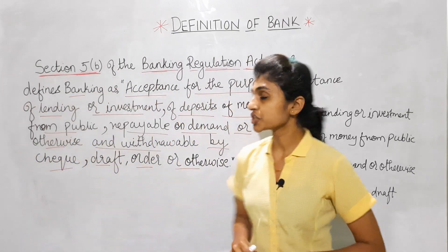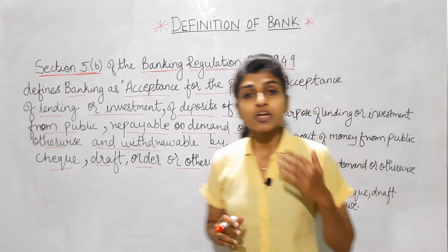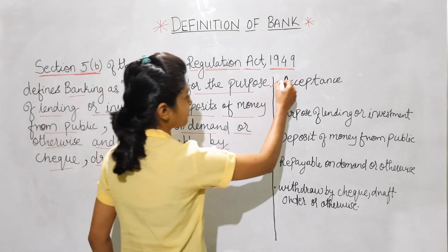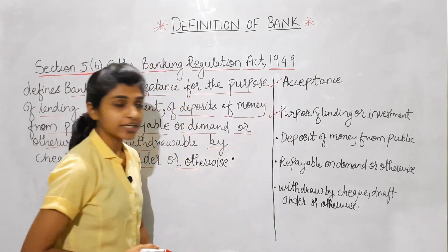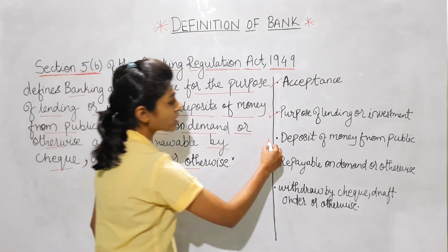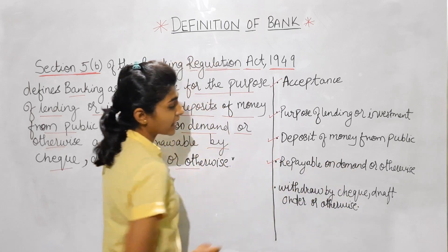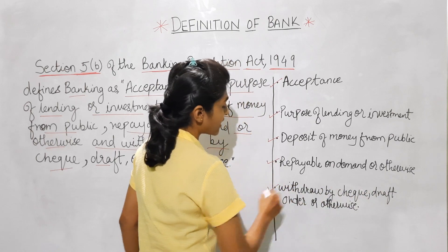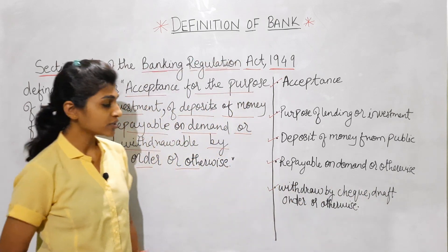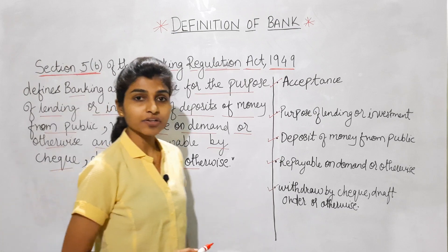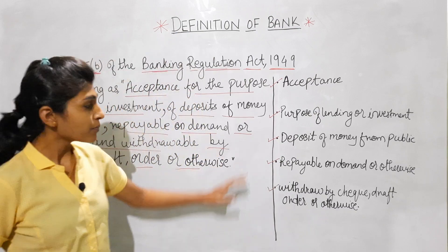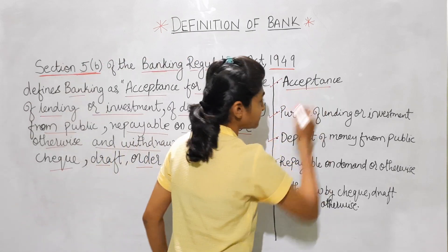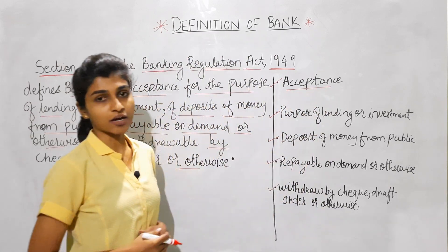According to Banking Regulation Act 1949, if we divide this definition into five parts: first, acceptance; second, purpose of lending or investment; third, deposits of money from public; fourth, repayable on demand or otherwise; and fifth, withdrawal by check, draft, order or otherwise. We will understand this definition by dividing it into these five parts.